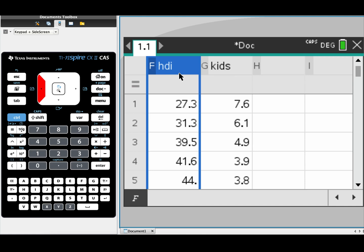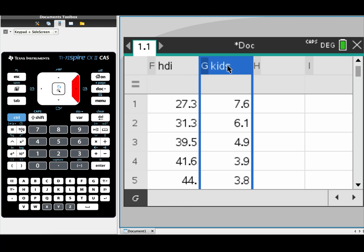We need to work out what is my explanatory variable and what is my response variable. In this particular question, the human development index or HDI, that is my explanatory variable. And the kids or children, as the question states, is my response variable.